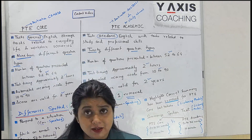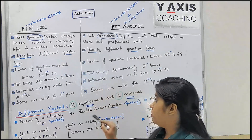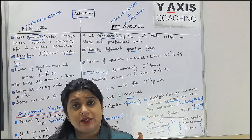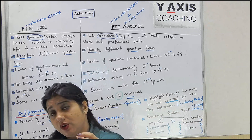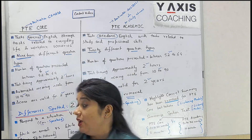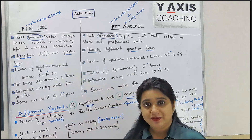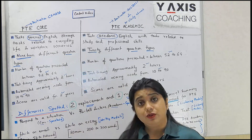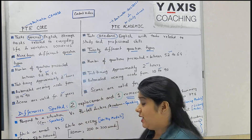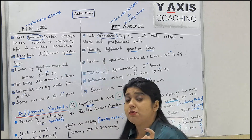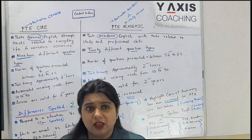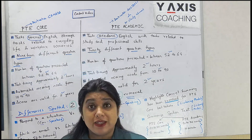Then what are the differences? Let us understand that. We have spotted two replacements and one removal. PT Academic has a task type known as 'retell lecture,' which has been replaced by 'respond to a situation.' Next, when it comes to the writing module, PT Academic test takers have to write an essay - they get 20 minutes, and the essay should have a minimum of 200 words and a maximum of 300 words. For PT Core test takers, things have become easier because they are expected to write an email and not an essay.